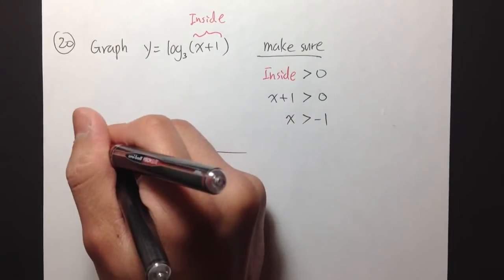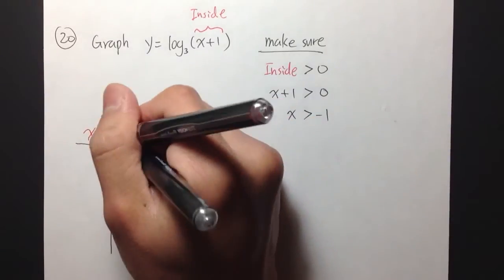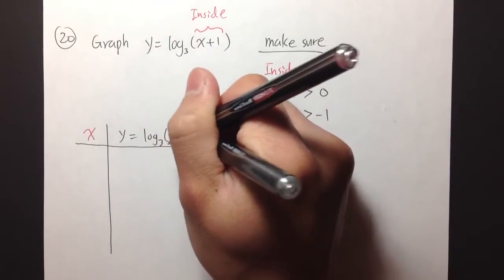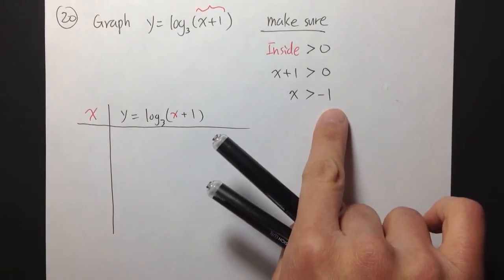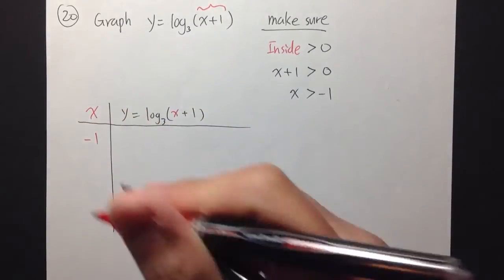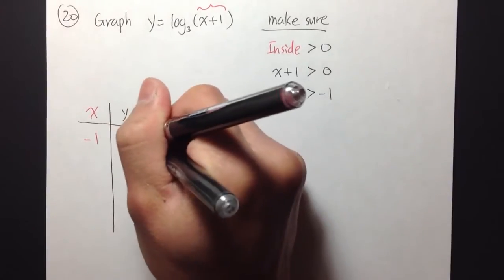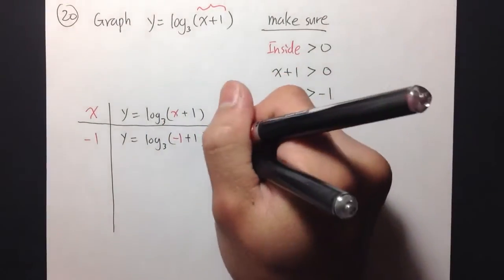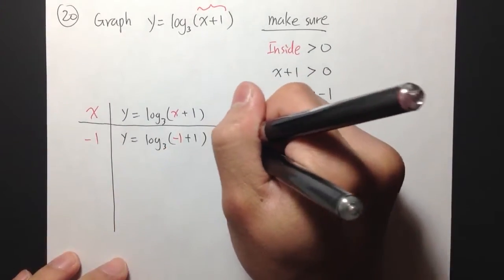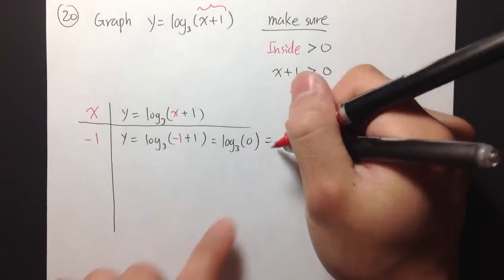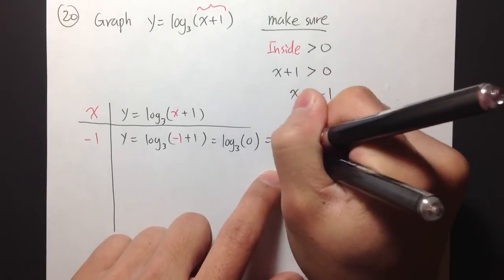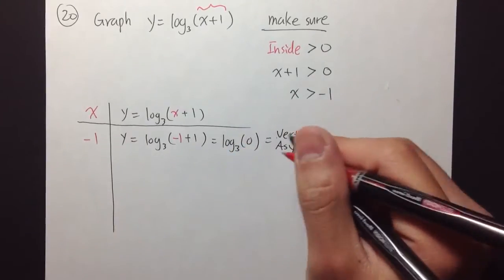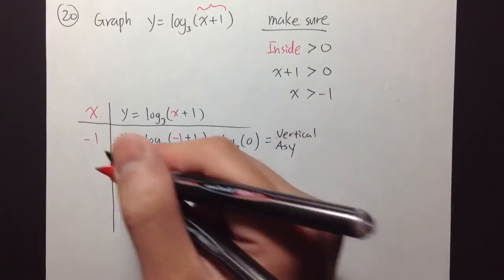To graph this, I'll do a table first with x values and y equals log base 3 of x plus 1. I'm going to plug in negative 1 first to show what happens: if x equals negative 1, we get log base 3 of (negative 1 plus 1), which is log base 3 of 0. This gives us a vertical asymptote. When you have log of 0, that means we have a vertical asymptote at x equals negative 1.